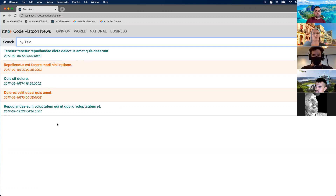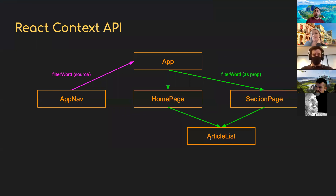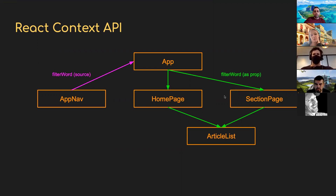After going through all this — hopefully this is a good example of that stretch challenge from news site four — but we were talking about context. Let's get back on the context train. The whole reason for going through this was we mocked up this diagram. Remember one key use case for context is where you get into a situation like this, where Homepage and SectionPage don't really care about filterWord — they're just acting as middlemen, passing it down to its child.